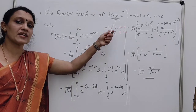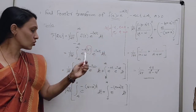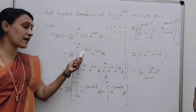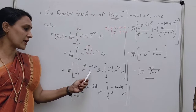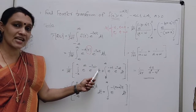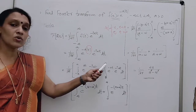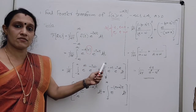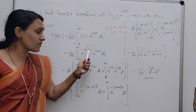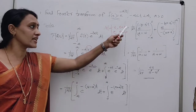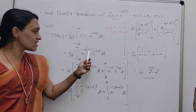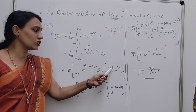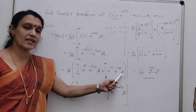For the interval from minus infinity to 0, |t| = -t, so the integrand becomes e^(at) × e^(-iωt). For the second integral from 0 to infinity, |t| = t for t greater than 0, so the integrand becomes e^(-at) × e^(-iωt) dt.